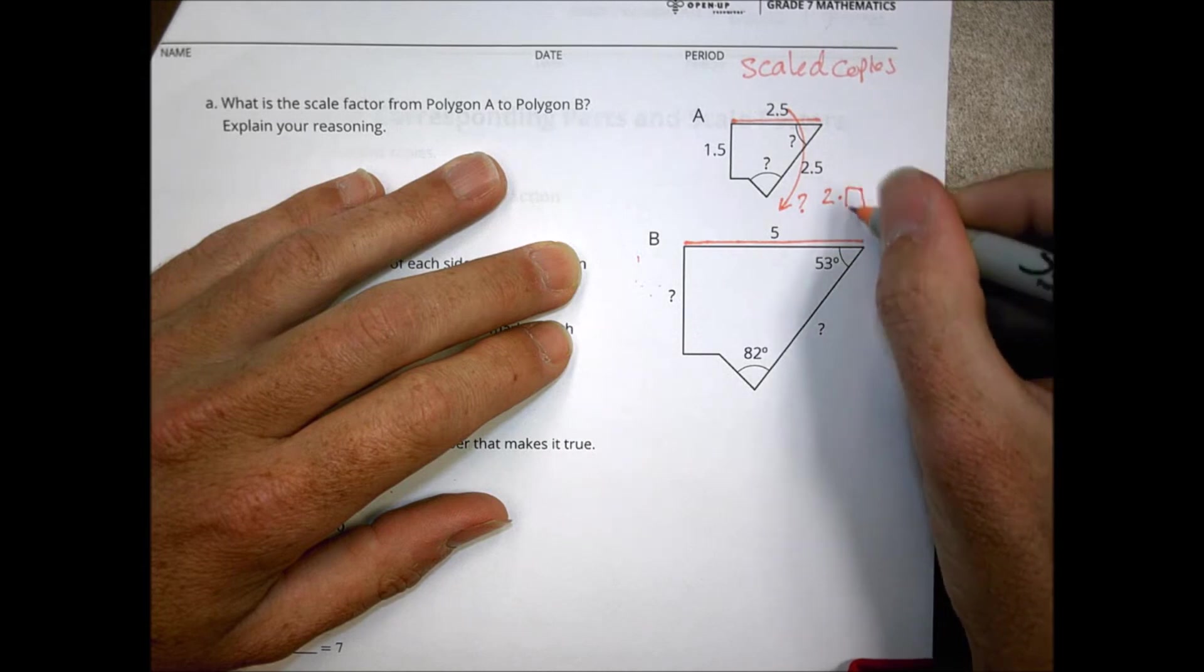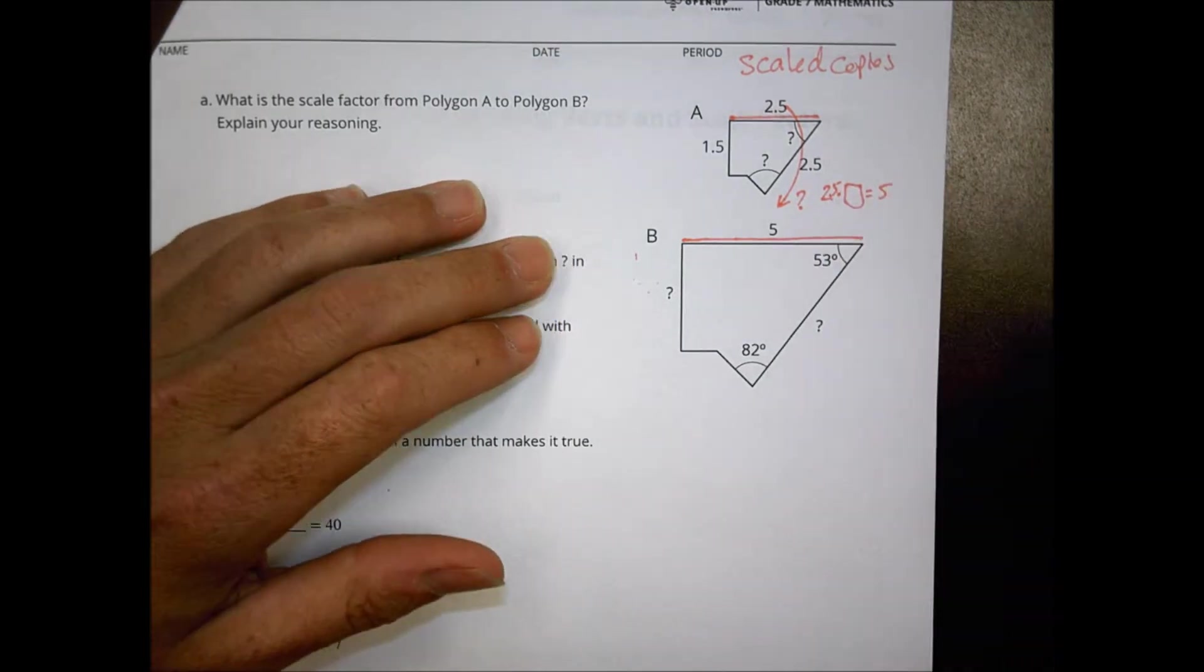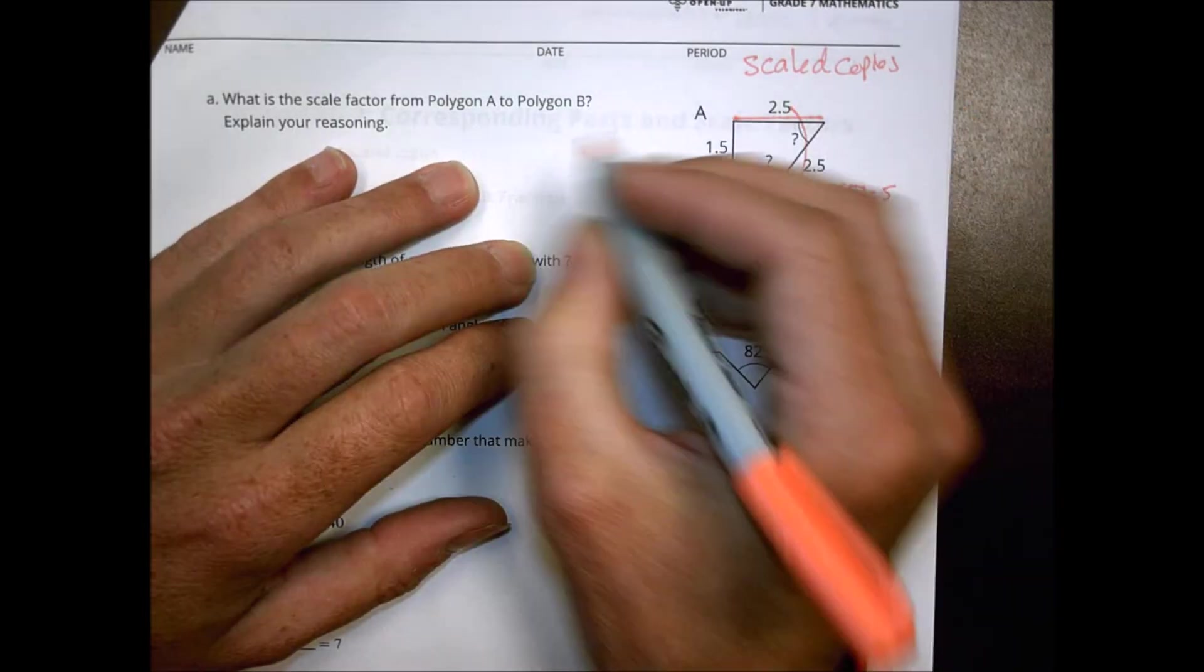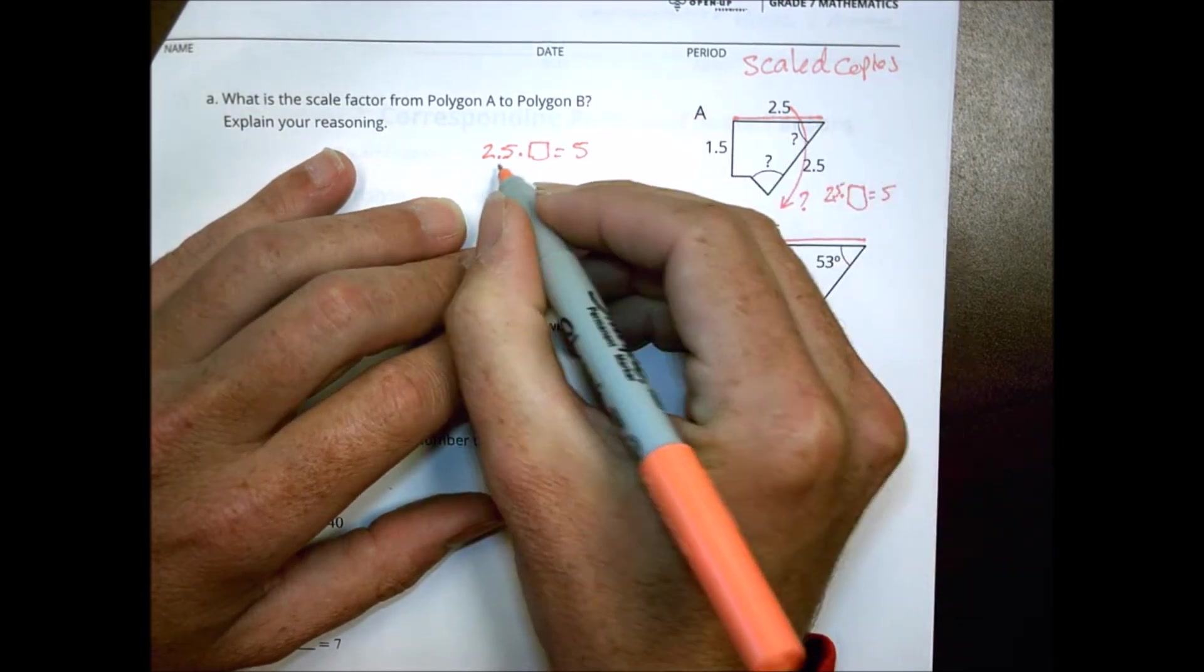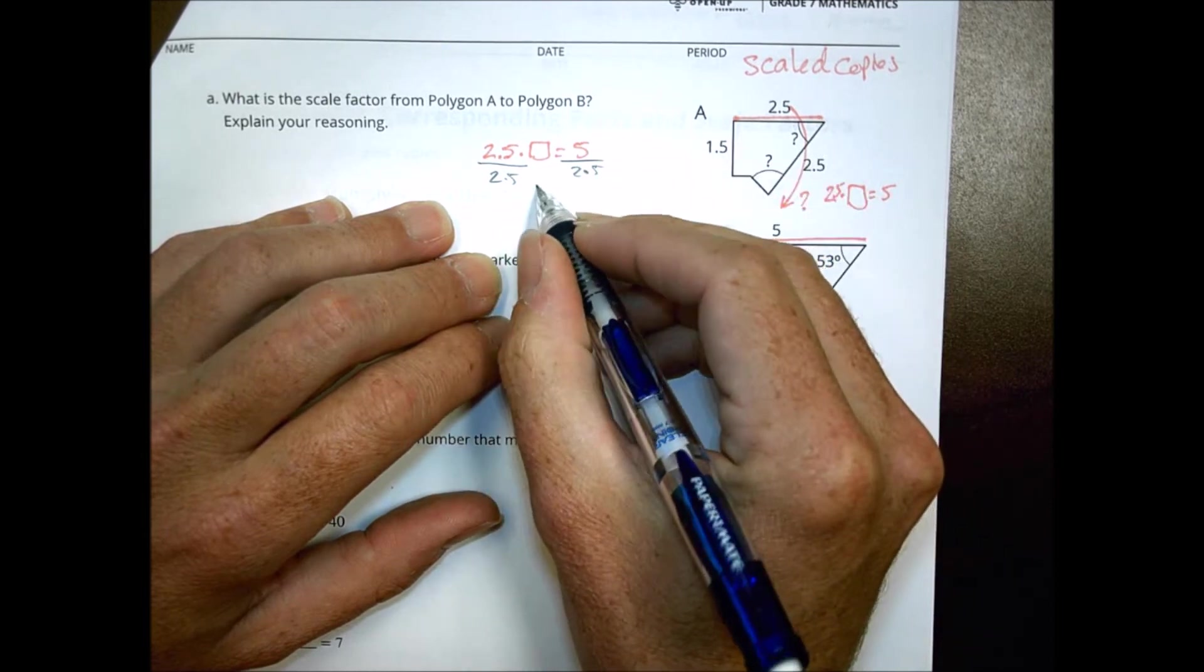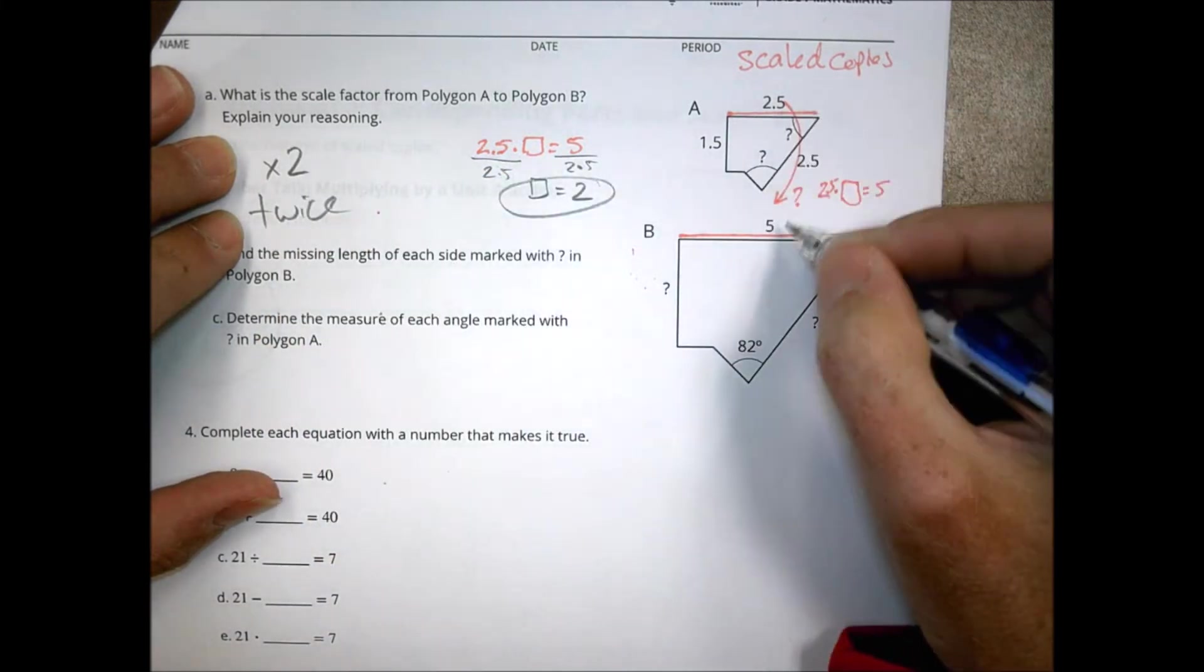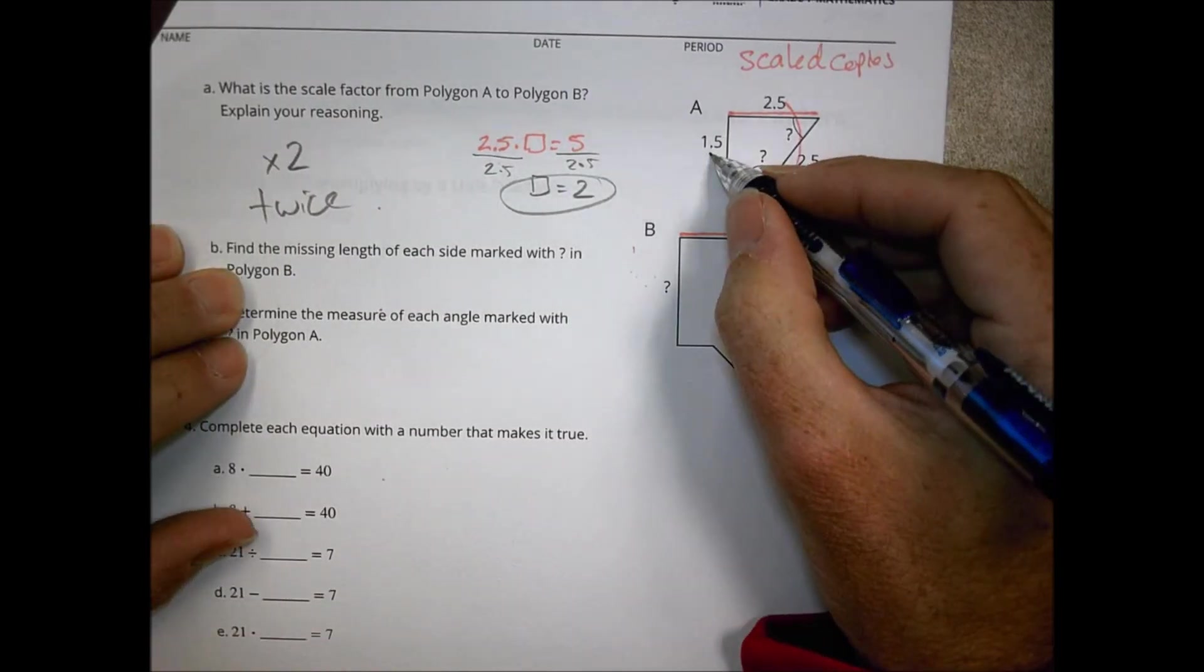So what does it take to go from 2.5 to five? That's the question. 2.5 times what number equals five. And in this case I might recognize that maybe I'm working with like money or something like that. I recognize that two dollars and fifty cents, if I have two dollars and fifty cents and I have two of those I get five dollars. Not sure how you want to look at it. But you can also do 2.5 times an unknown number equals five. You could divide both sides by 2.5. And you end up with an answer of what we want to know is two. And so our scale factor is times two. It's twice as large. And that's what's happening from this copy to that copy. We're multiplying it by 2.